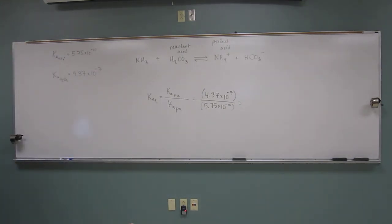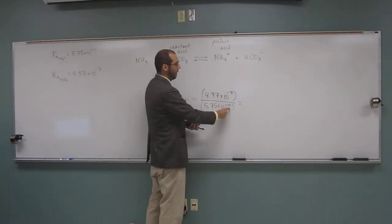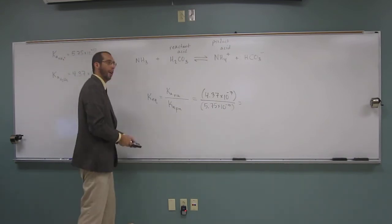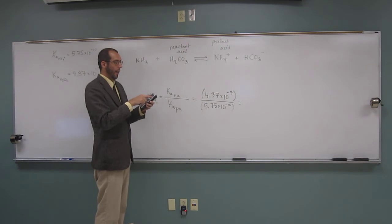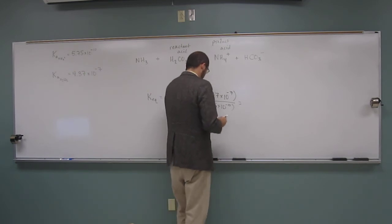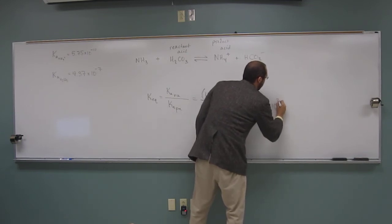Let's get out our calculators. And you should expect that since the smaller number is on the bottom, that this number is going to be bigger than 1. So that's a way to kind of check yourself. And if we look at it, yeah, it's 760. So that's bigger than 1. In fact, let's write it as 7.60 times 10 to the 2.